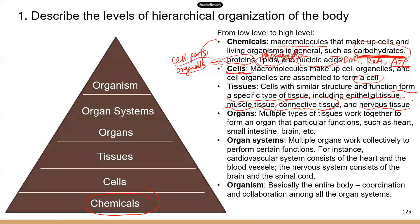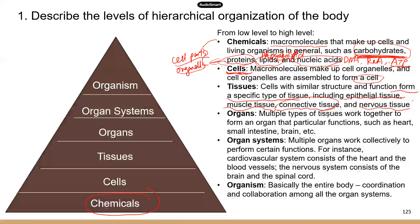Lastly, we have nervous tissue — found in the brain, the spinal cord, and other parts of the body in the peripheral nervous system. With multiple tissues working together, they form organs with a particular function. For example, your brain is an organ, your liver is an organ, and the small intestine is an organ.